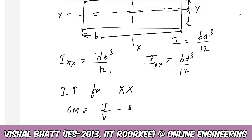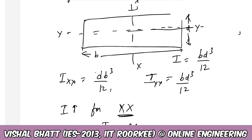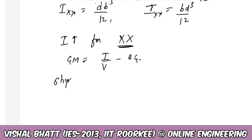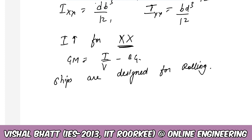Since GM equals I/V minus BG, a higher I value means greater stability. Since Ixx is larger, rotation about the xx-axis (rolling) is more difficult, while rotation about the yy-axis (pitching) is easier. Rolling is easy, which means the ship must be designed to maintain stability in rolling because rolling is more critical. If rolling stability is lost, pitching stability will also be lost.